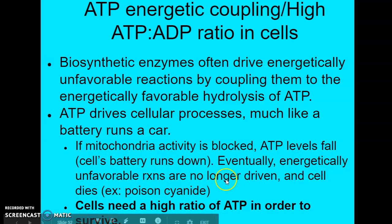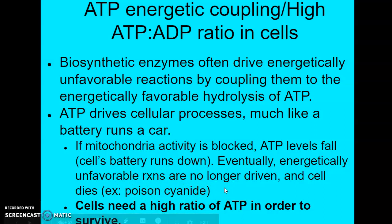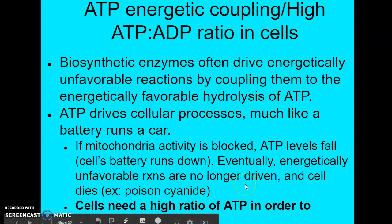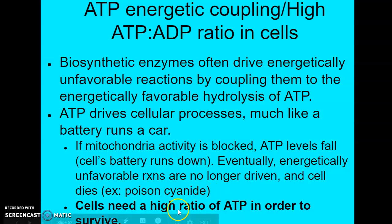The example here is poison cyanide, because that's actually how it works. Poison cyanide works by blocking the activity of the mitochondria, so you can't produce any more ATP, and therefore all of your cells die. Cells need a high ratio of ATP in order to survive.